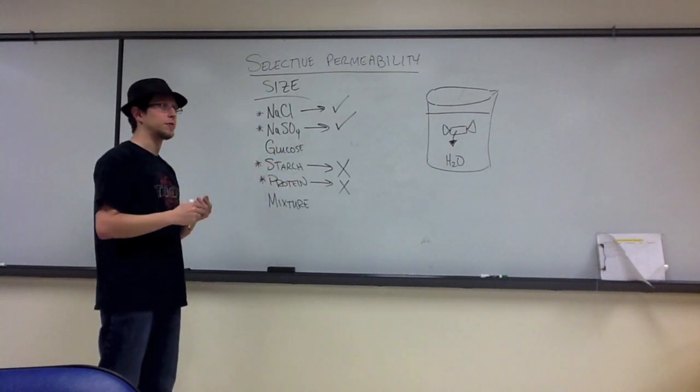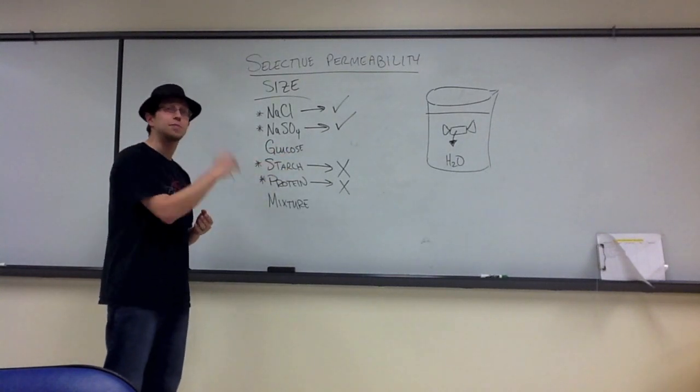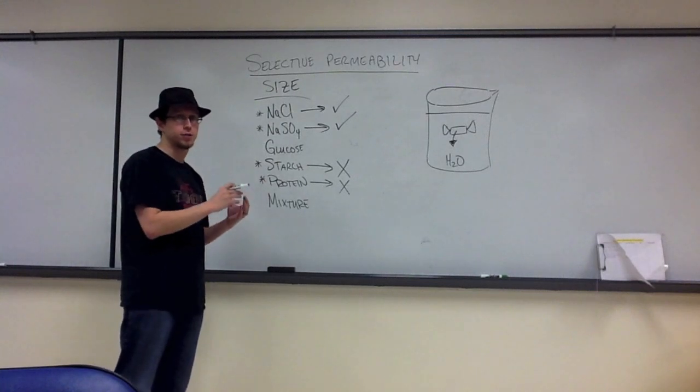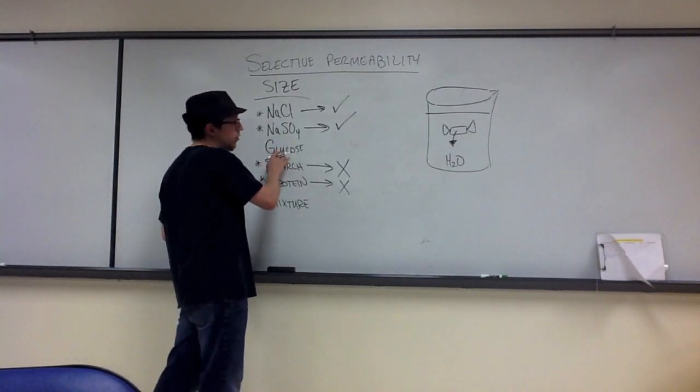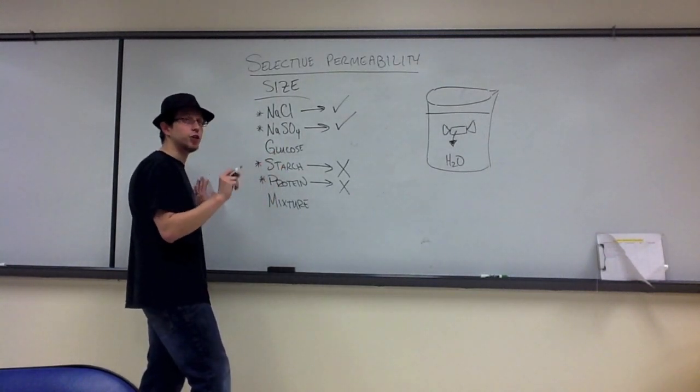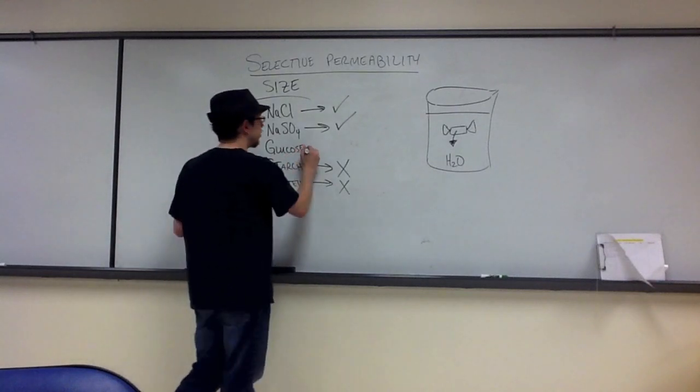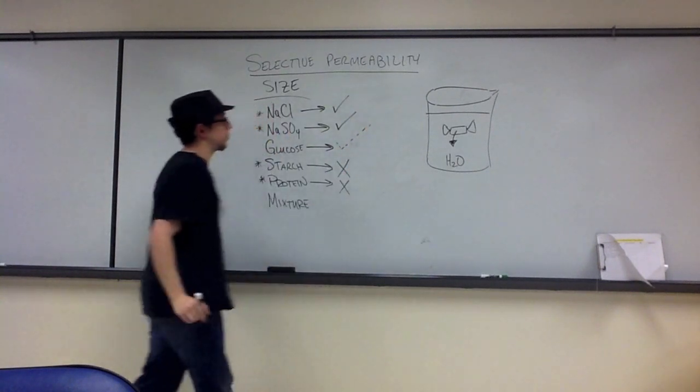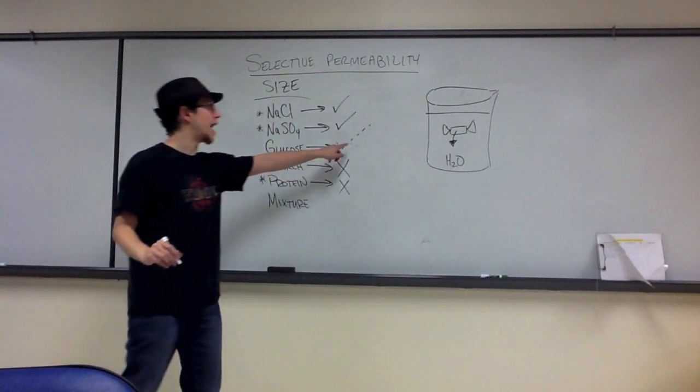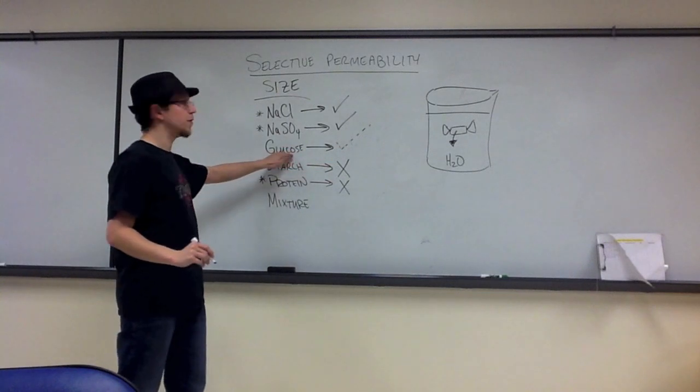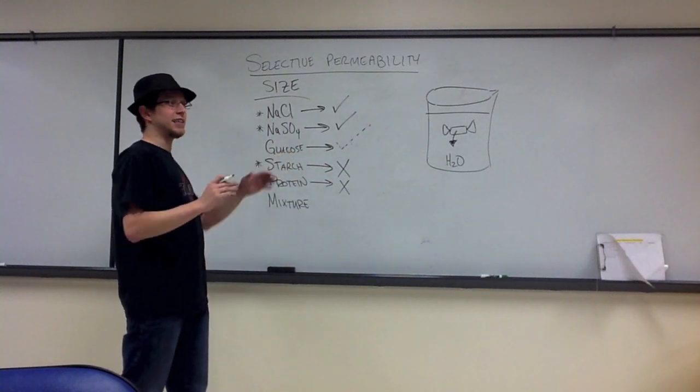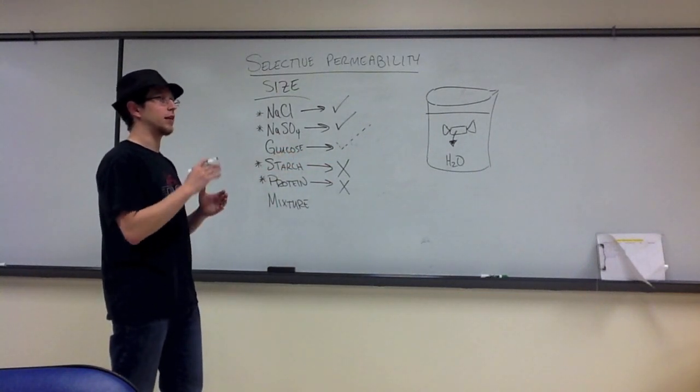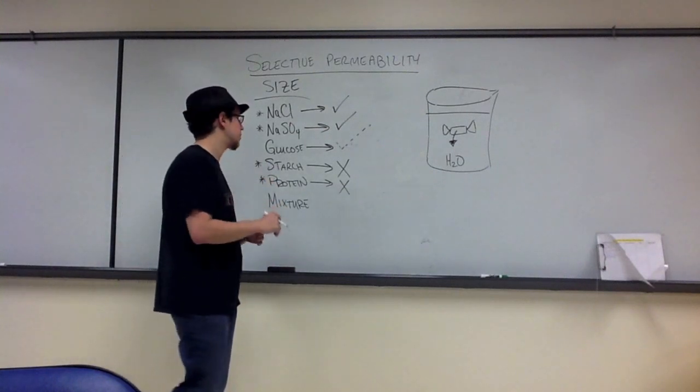From one of your other experiments you saw that sucrose actually didn't permeate the bag, so disaccharide is too large. But as it turns out, glucose happens to be just small enough that it still maintains the potential to permeate that bag. But I put a dash check because what we're going to find with glucose is that it's going to be in very low amounts when it does actually permeate the bag.